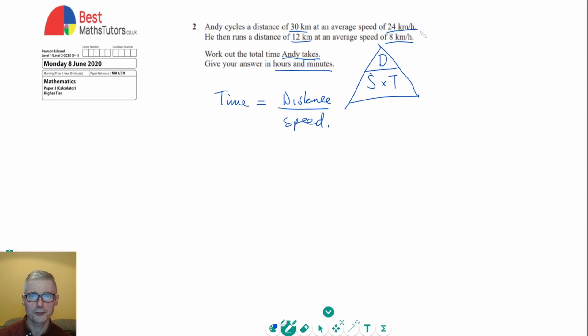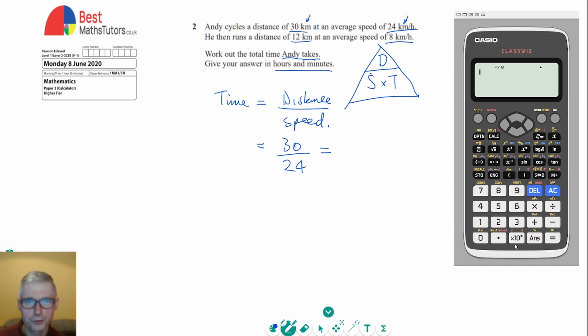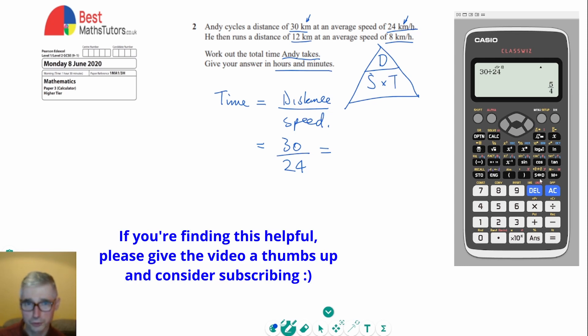For the first part of Andy's journey, the time is the distance—30 kilometers—divided by the speed. It's important to note the units are consistent, both in kilometers, so it's 30 divided by 24. I'm going to do that on the calculator, so 30 over 24. We get 5 over 4, and pressing the SD button gives 1.25.